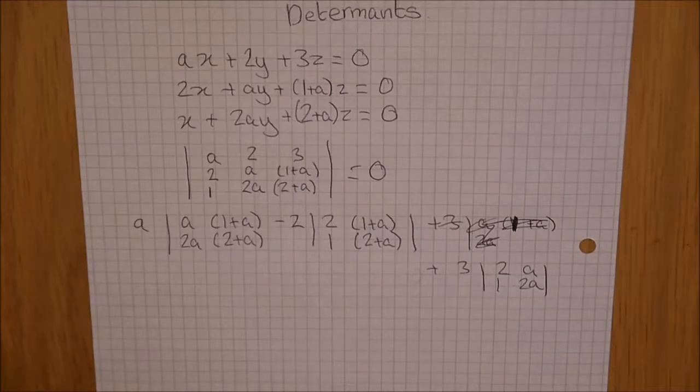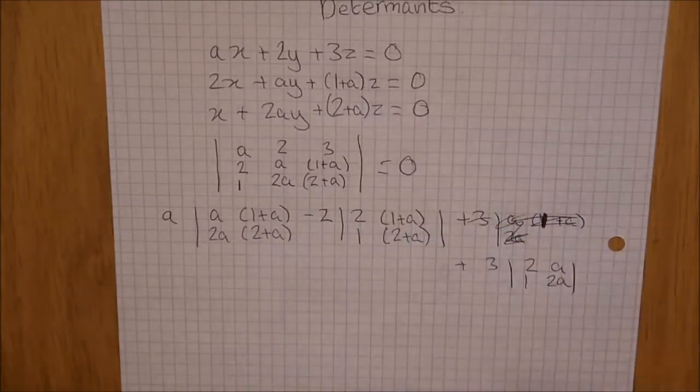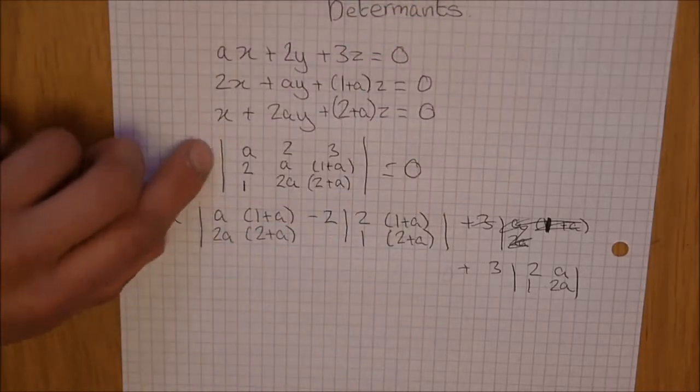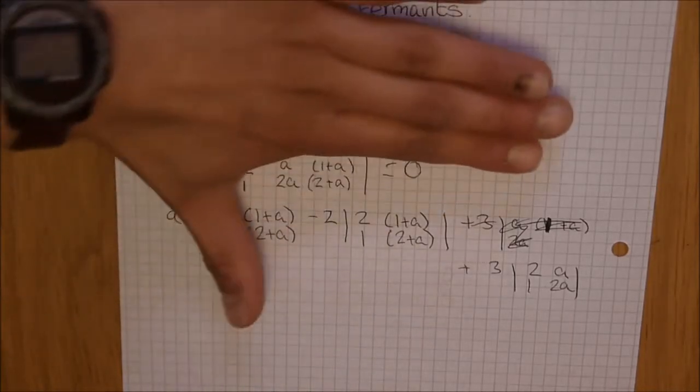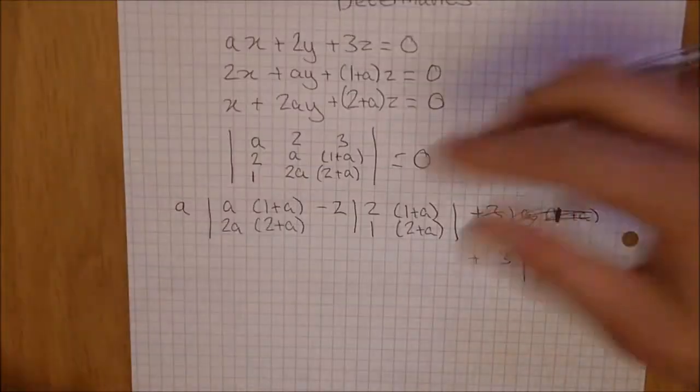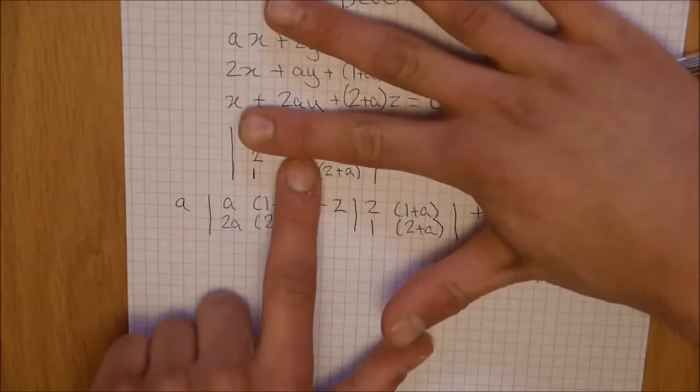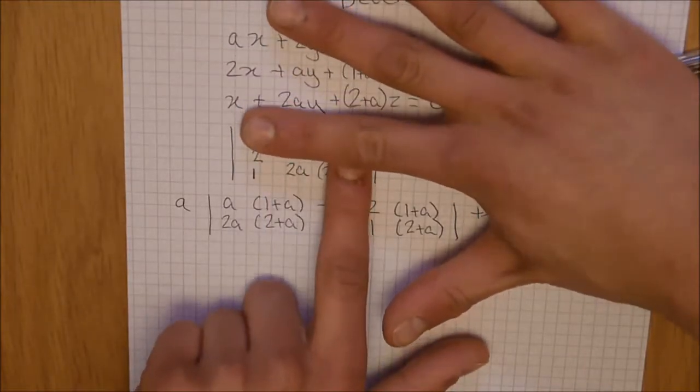Now, you've got to remember when doing 3 by 3 determinants that it goes plus, minus, plus. And also, if you block out the row and column, for example, if I'm looking at that a there, I block out that row and column, it is the determinant of that times a.